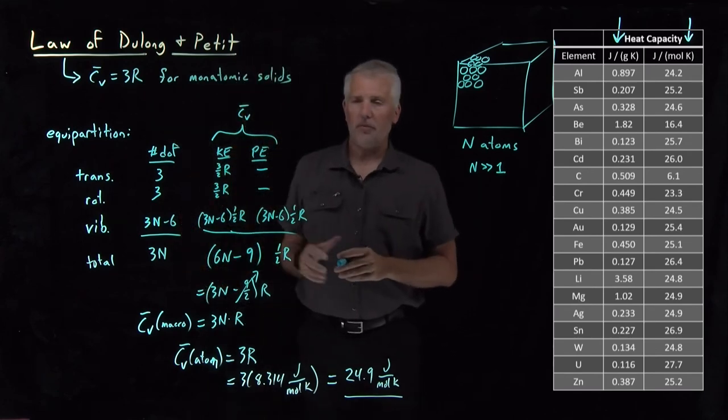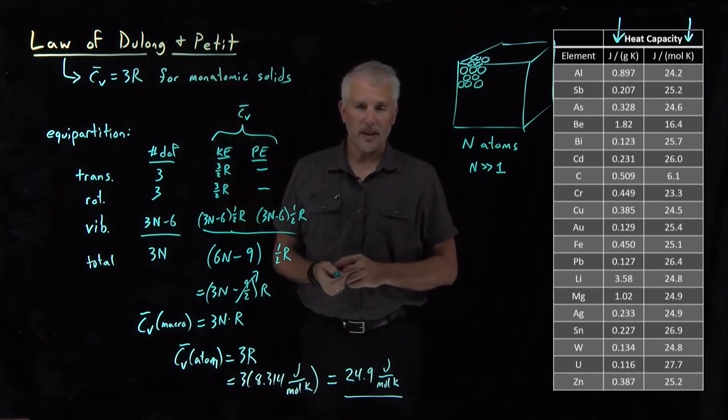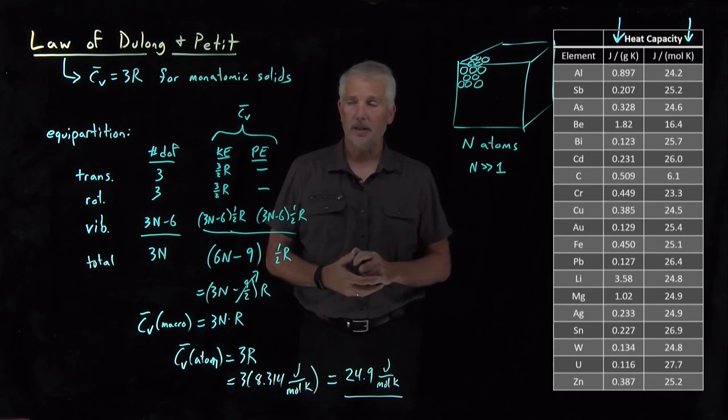Like I said, that fact has been known for a long time. Dulong and Petit, as you might be able to guess from the names, they were French scientists that were working in the early 1800s when they first observed this trend that the heat capacity is very predictable for monatomic solids,